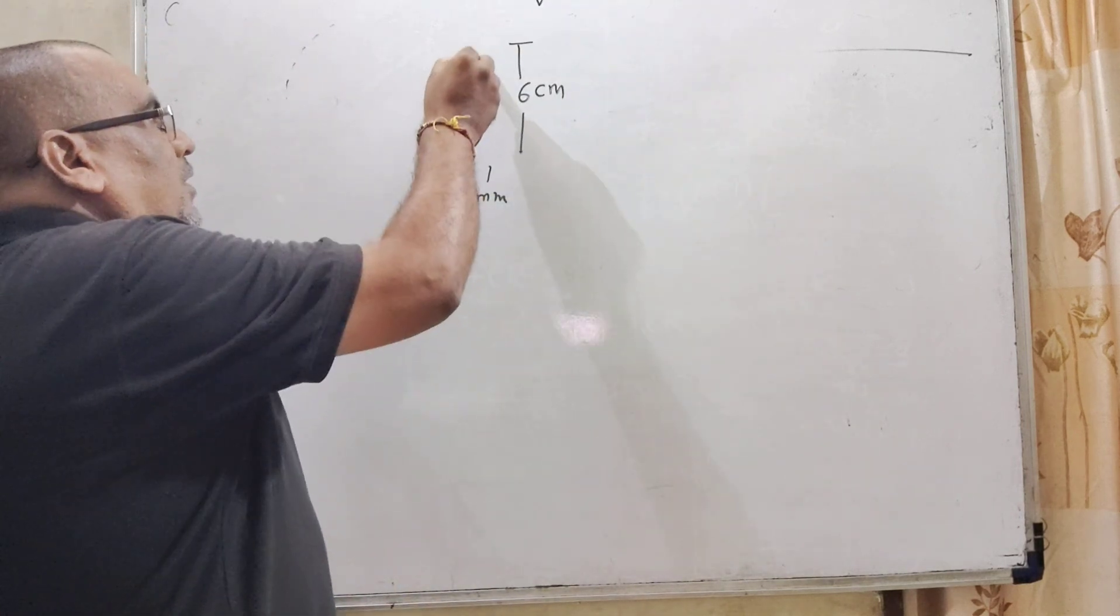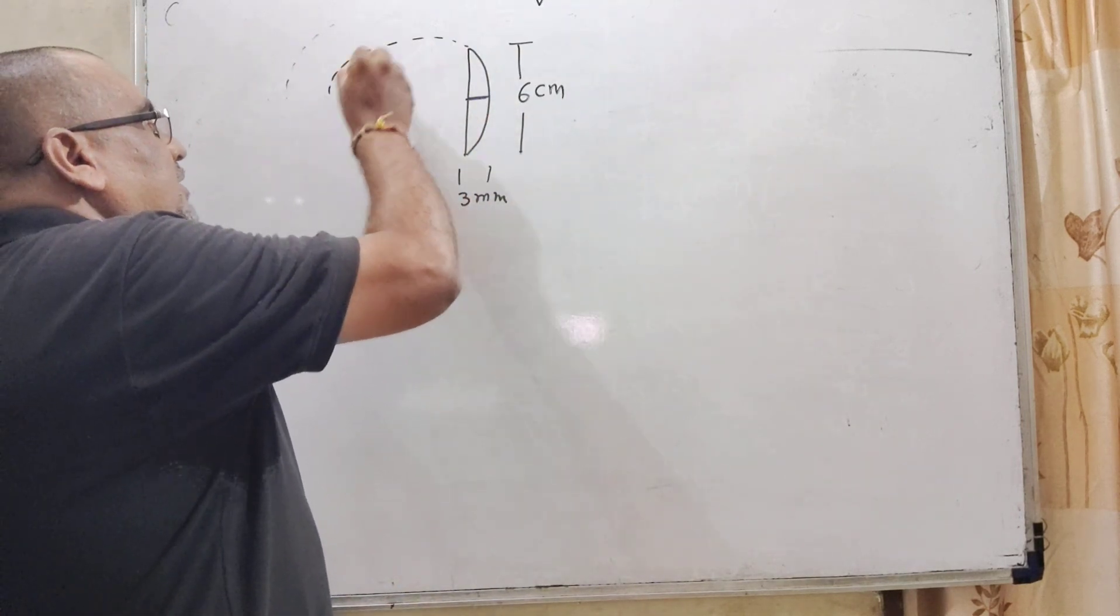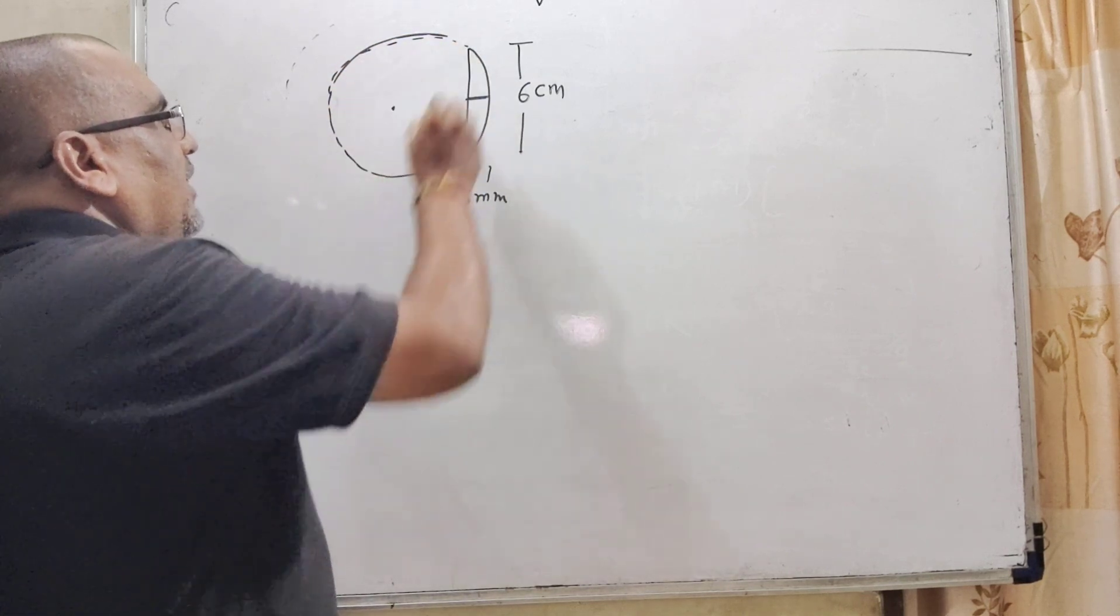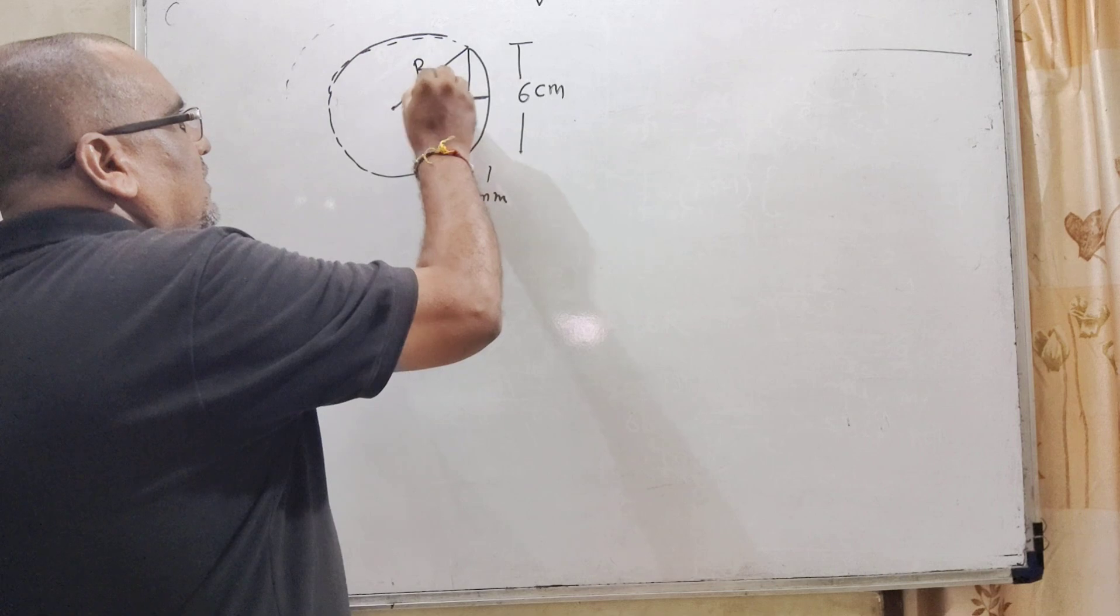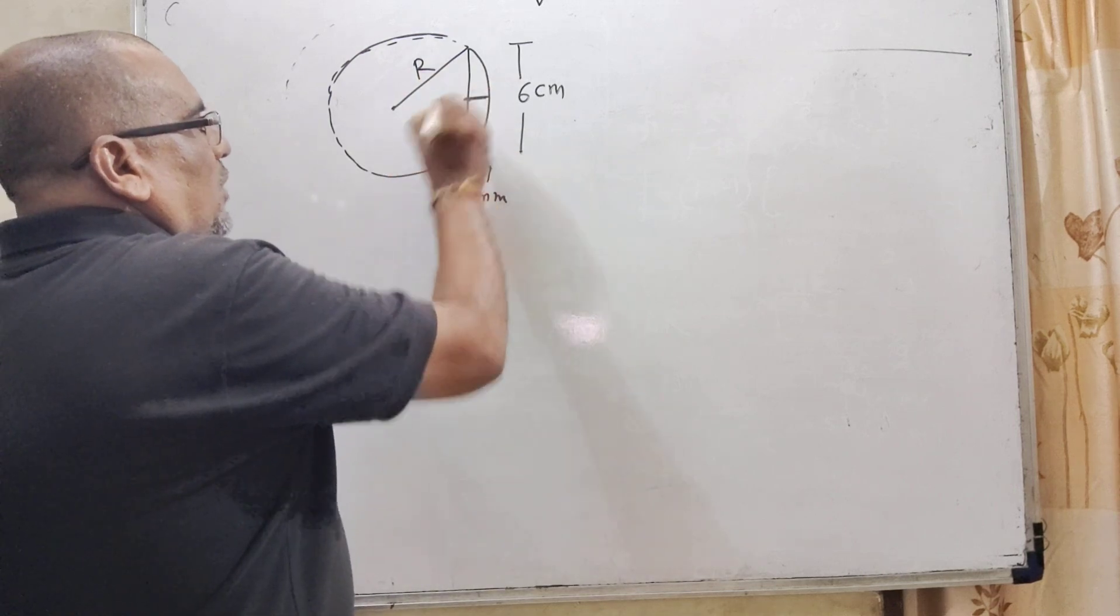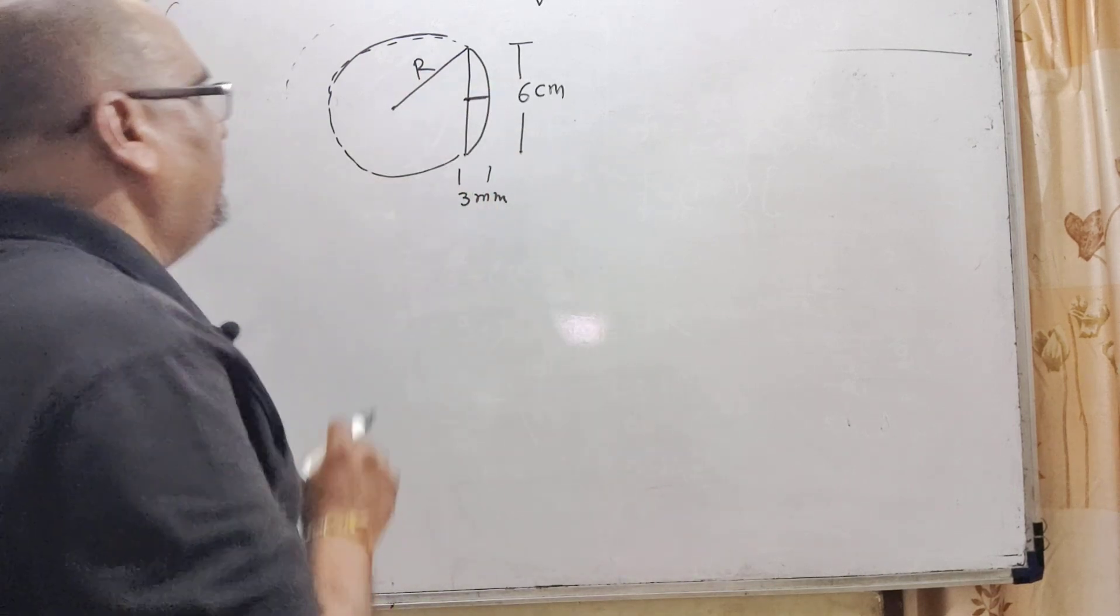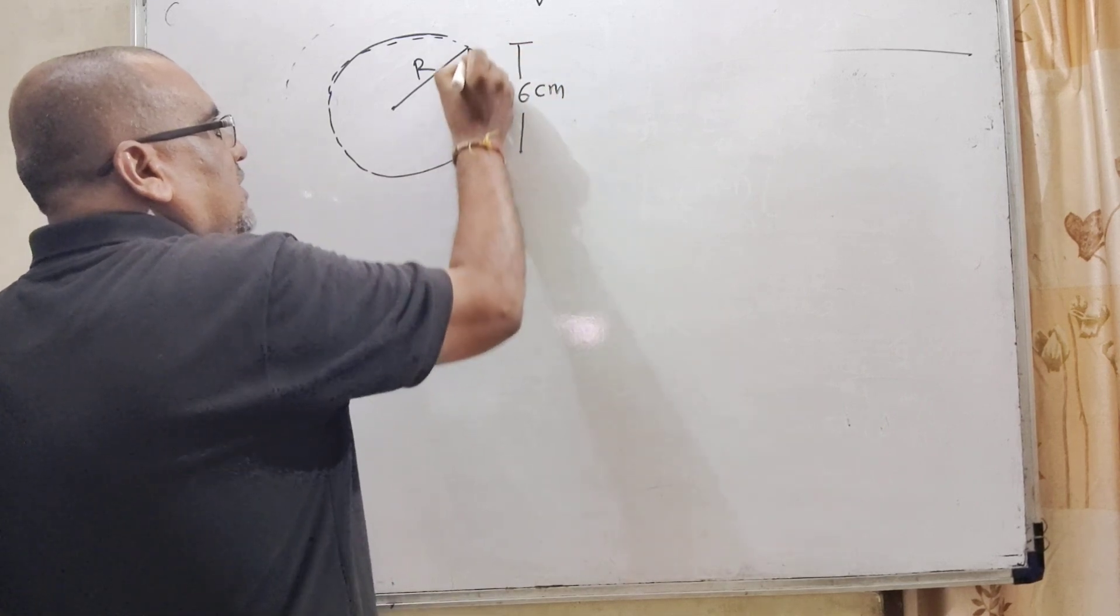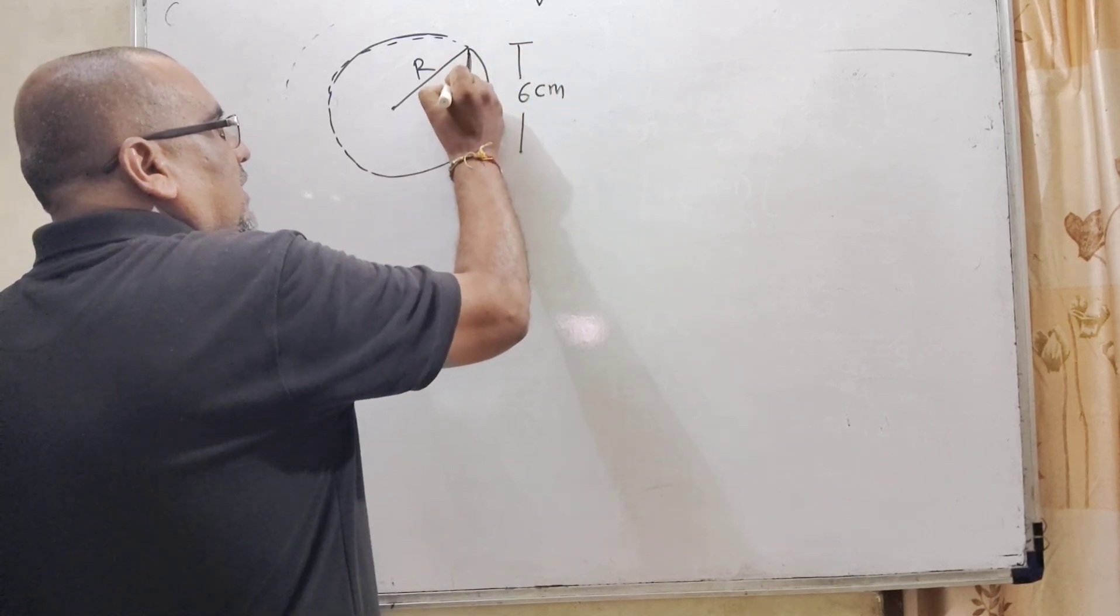So, let us first draw the complete sphere which is the part of this lens. This is the complete sphere and this is radius. Let us calculate the radius. This is the total diameter 6, so this is radius 3 cm.